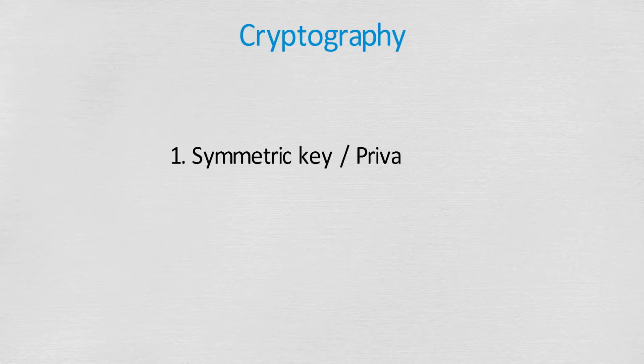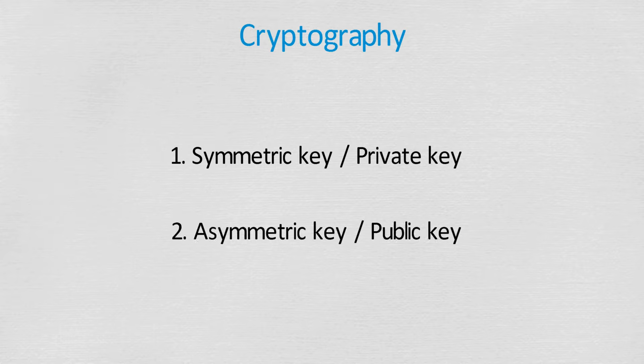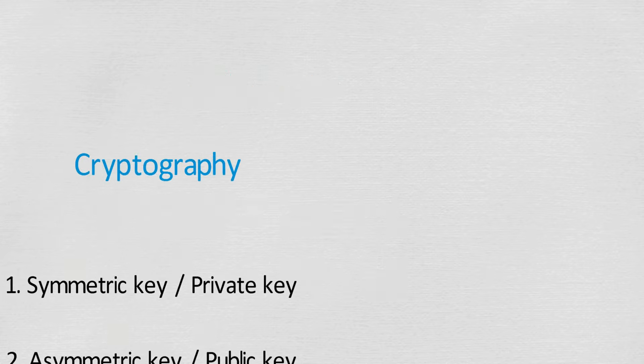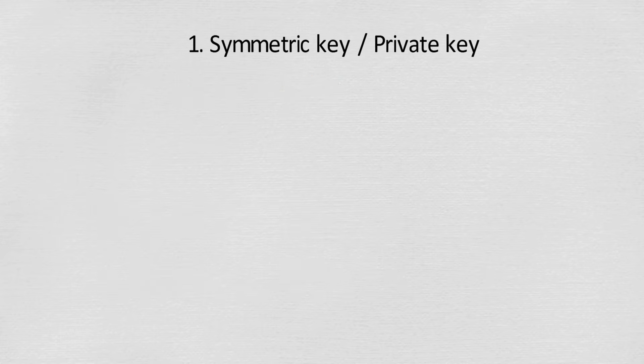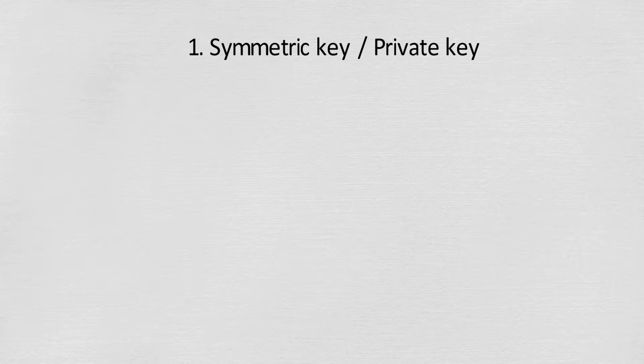Cryptography can be implemented in two ways depending on the type of key used: symmetric key, or private key cryptography, and asymmetric key, or public key cryptography. Symmetric key cryptography uses the same key to encrypt and decrypt the messages.